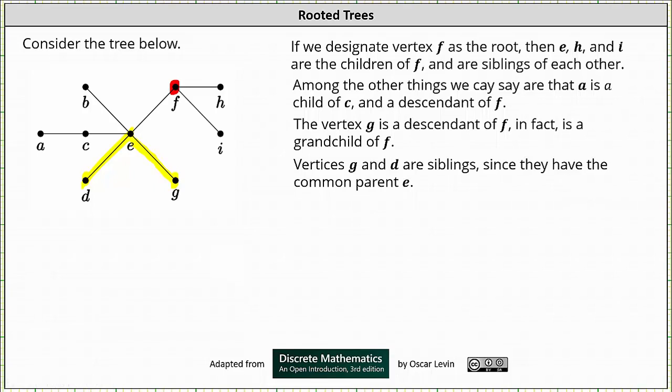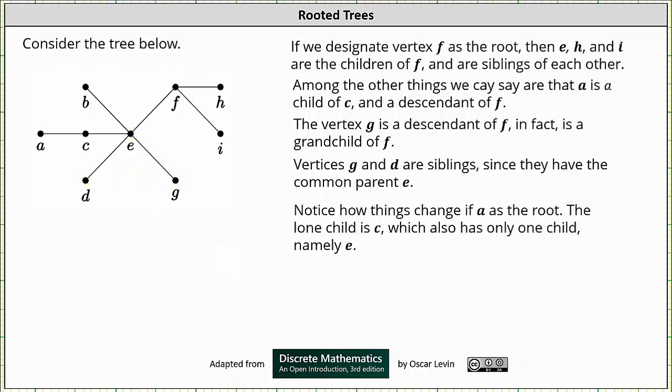Now we'll change the root and see how it changes the relationships. We will now make A the root. Notice when A is the root, the lone child of A is C, the only adjacent vertex, which also has only one child, namely E. Notice C and E are adjacent. Since C is closer to the root, C is the parent and E is the child.